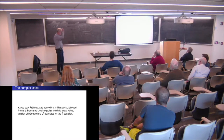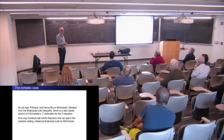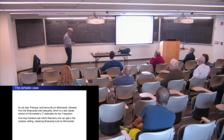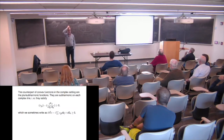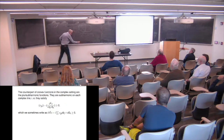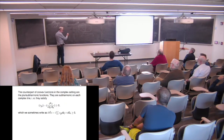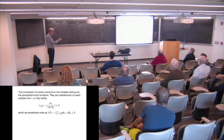Now we go to the complex case. We saw that Prekopa and Brunn-Minkowski follow from Brascamp-Lieb, which is the real version of Hörmander. So you can ask: what theorems do you get in the complex setting by using Hörmander instead of Brascamp-Lieb? For those who don't work with complex analysis: I'm going to talk about plurisubharmonic functions. They are functions in C^n that are subharmonic on each complex line. This is the same as saying the complex Hessian is positive semi-definite.